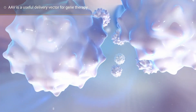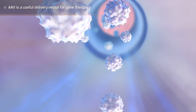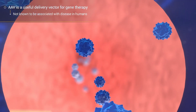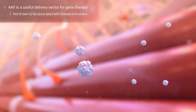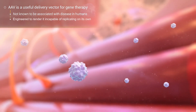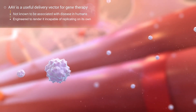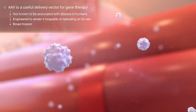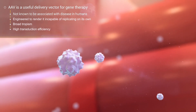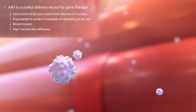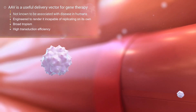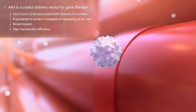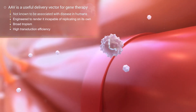AAV is a useful delivery vector for gene therapy because it is a small virus that is not known to be associated with disease in humans and is incapable of replicating on its own. AAVs also show broad tropism, or tissue specificity, and high transduction efficiency, which means that the recombinant AAV can efficiently deliver genetic material to different cell types.